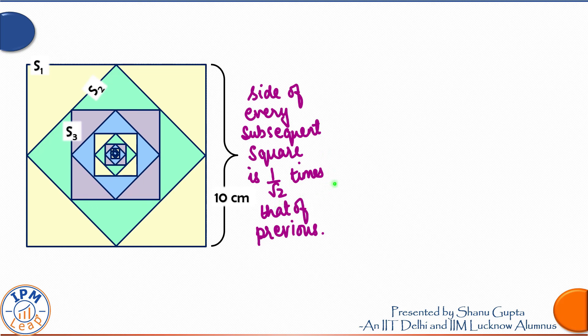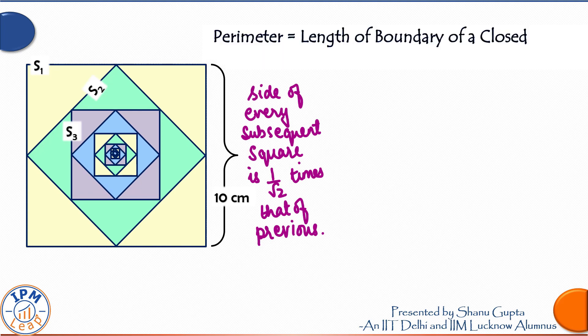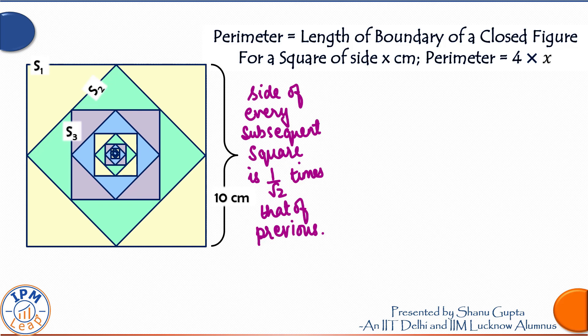In this question, we have to calculate the sum of perimeters of all the squares. Now what is perimeter? Perimeter is simply the length of boundary of a closed figure. For a square of side x centimeter, perimeter will be 4 times x. Let us quickly jot down the sides of first few squares.